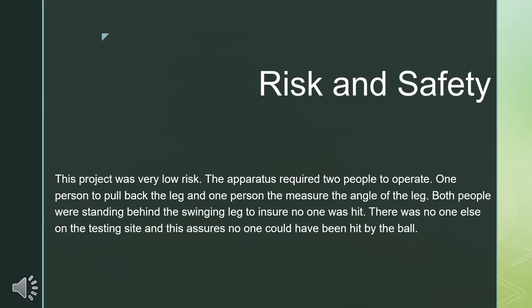This project was very low risk. The apparatus required two people to operate: one person to pull back the leg and one person to measure the angle of the leg. Both people were standing behind the swinging leg to ensure no one was hit. There was also no one else on the testing site, which assures no one could have been hit by the ball.